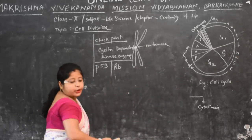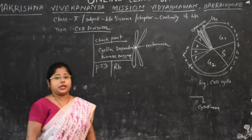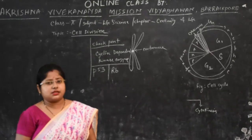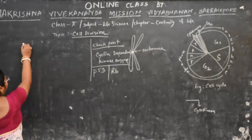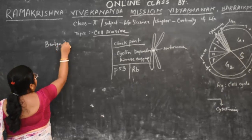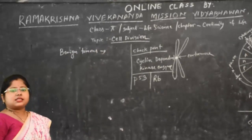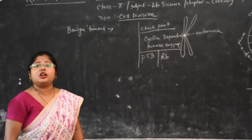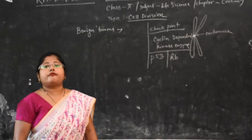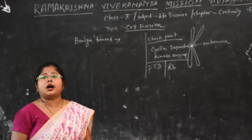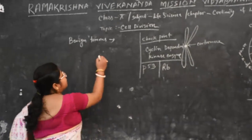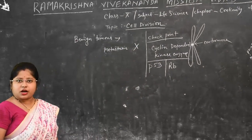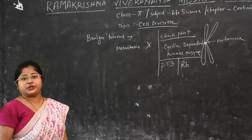In a benign tumor, it is non-cancerous in nature and metastasis does not occur. Metastasis is the spreading of abnormal cells from the region of origin to another part of the body. Since metastasis does not occur in benign tumors, they are non-cancerous.